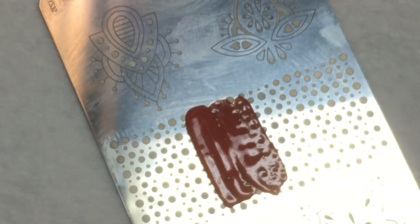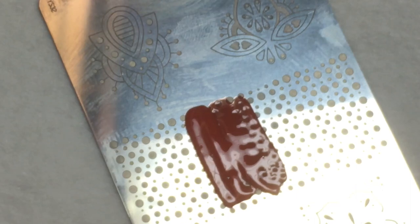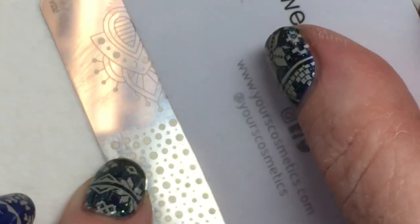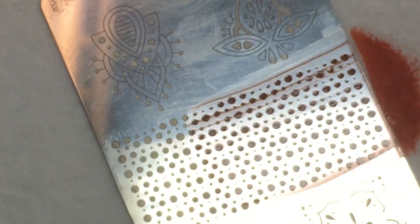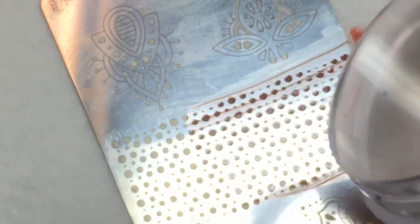Apply your color to your stamping plate, remove the excess, and pick it up on your stamper. By using a color that is similar in color to the one that you polished the nail with,